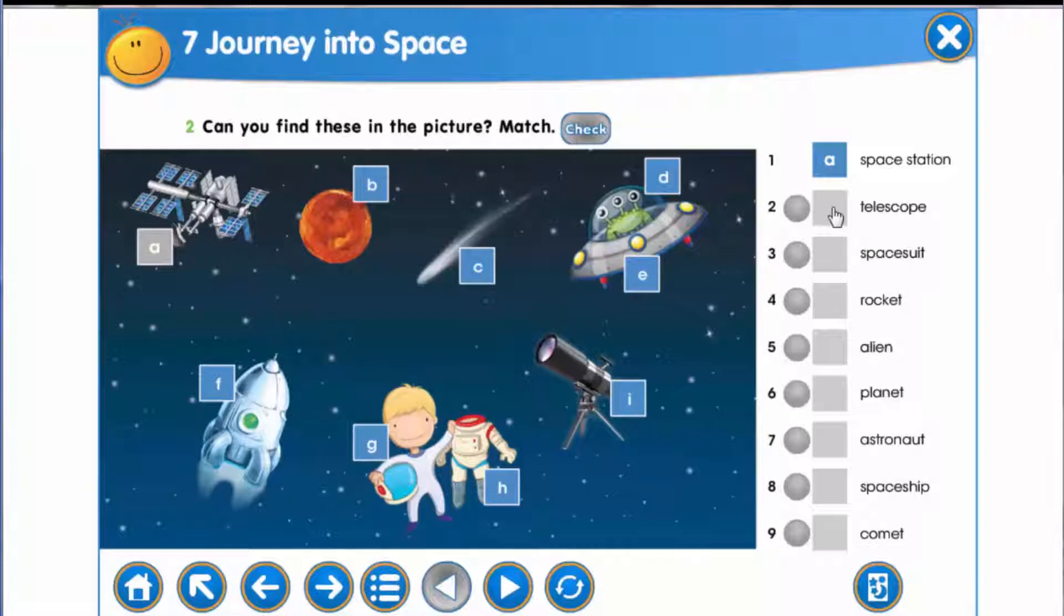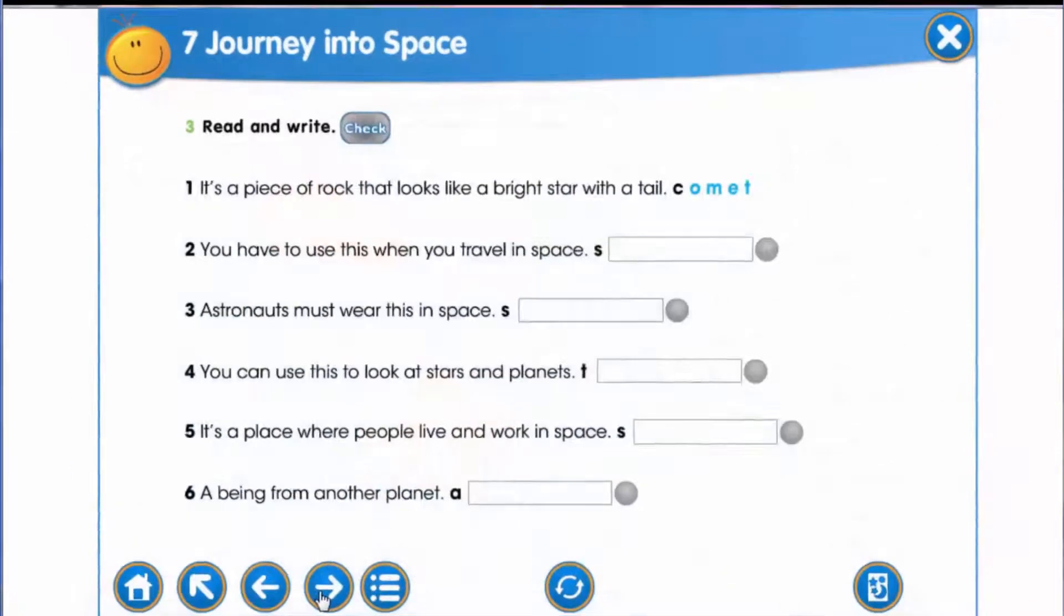Please write down this exercise in your copybook. And now we'll write. Look at exercise number three. Read the sentences and write down the words which define the meaning given in the sentences. As it's given in the first sentence, it's a piece of rock that looks like a bright star with a tail. The first letter is C, so you write comet.